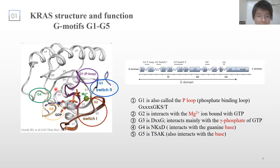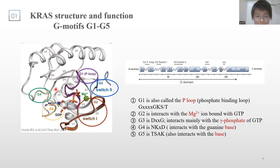So how does KRAS bind GTP or GDP? Several motifs conserved in the whole RAS superfamily are involved in GTP or GDP binding — that is, G-motifs G1 to G5. G1 is also called the P-loop, where P represents phosphate. G2 and G3 are both very close to the phosphate group, but G2 mainly interacts with the magnesium ion. G4 and G5 on the other side interact with the guanine base.